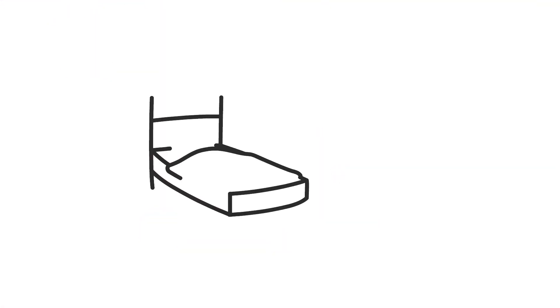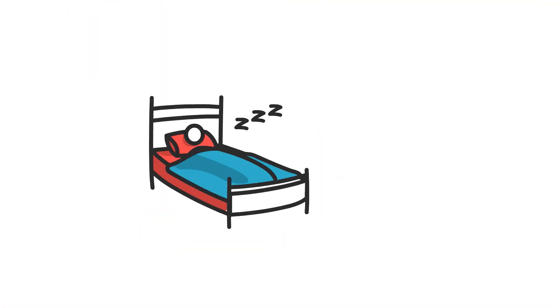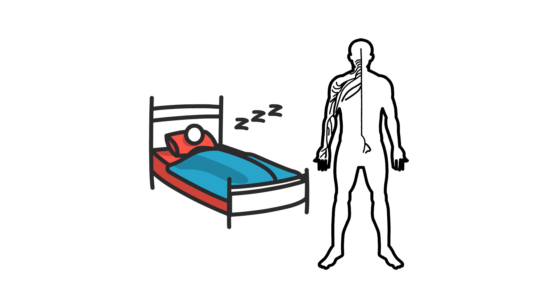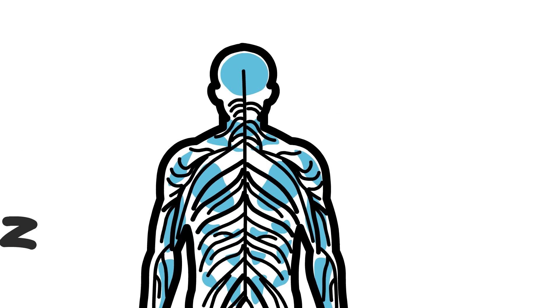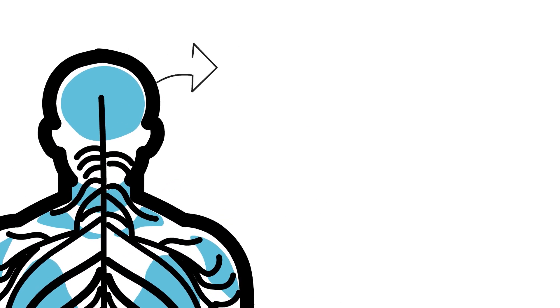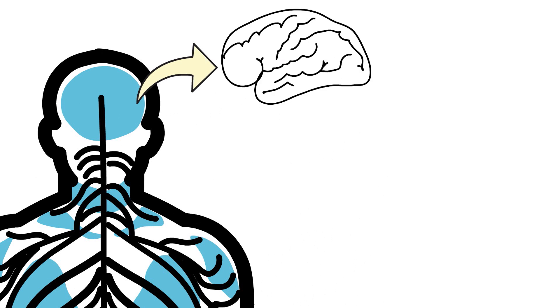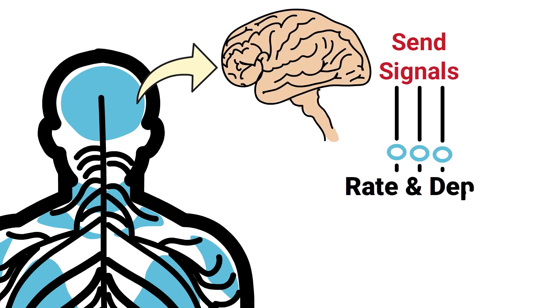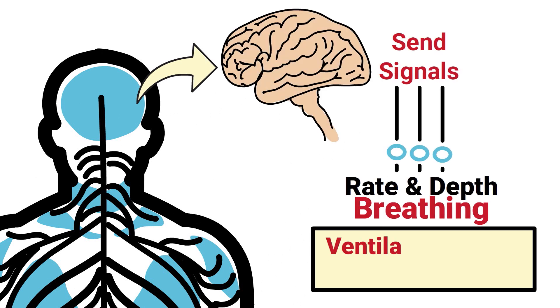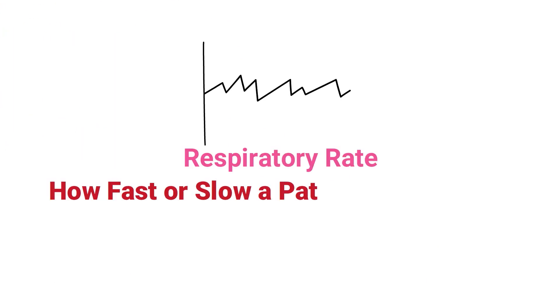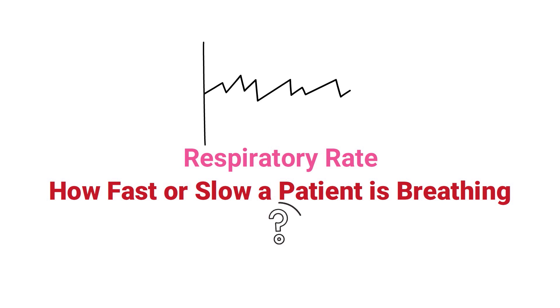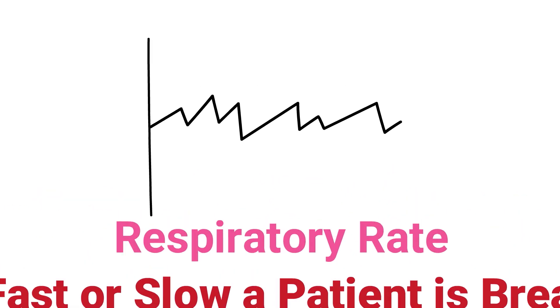Breathing is a phenomenon that occurs automatically with no conscious awareness, thanks to the autonomic nervous system. Structures within the brain send signals that control the rate and depth of breathing that occurs to meet the ventilatory needs of the body. Looking at the respiratory rate tells us how fast or slow a patient is breathing.